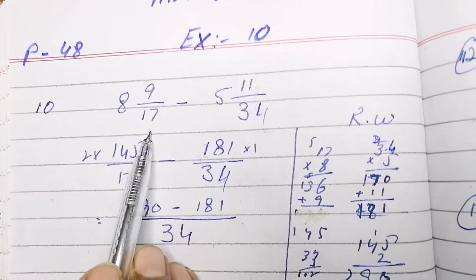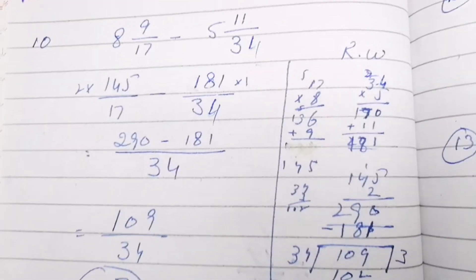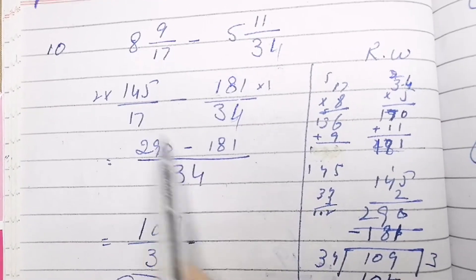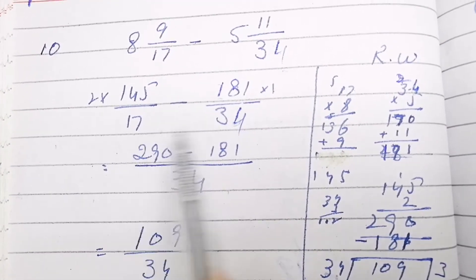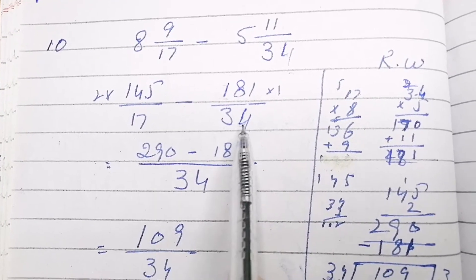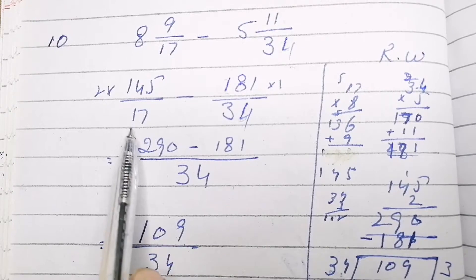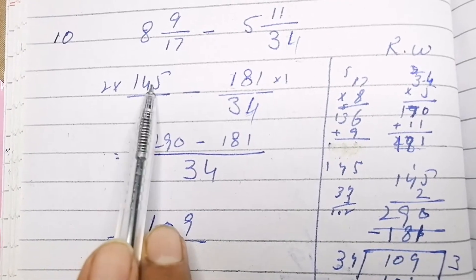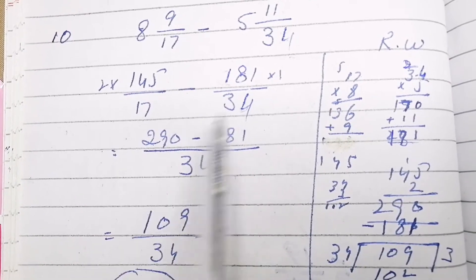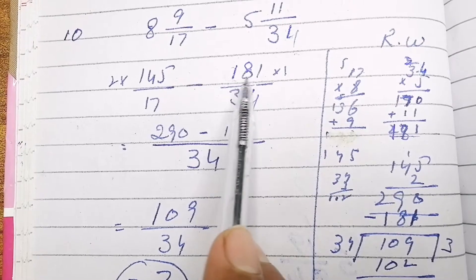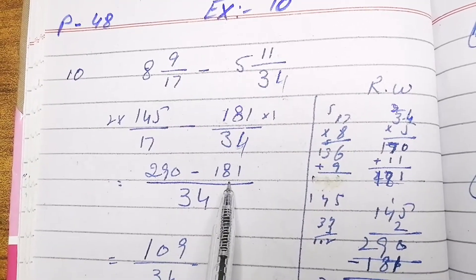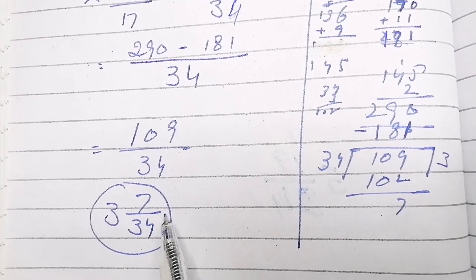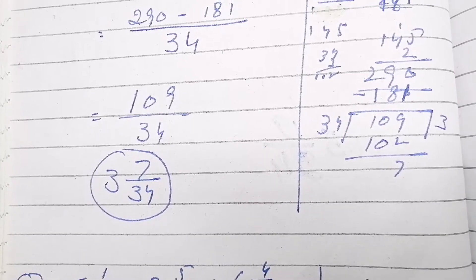Question 10: 8 whole 9 over 17 minus 5 whole 11 over 34. We first change the mixed fractions into improper fractions, then take the LCM. The denominators are 17 and 34, so the LCM is 34. Multiplying 17 into 34, then multiply by 2 to get 290. We get 290 and 181, subtract them, divide, and the answer is 3 whole 7 over 34. The rough work is also shown so you can check if you find any difficulty.